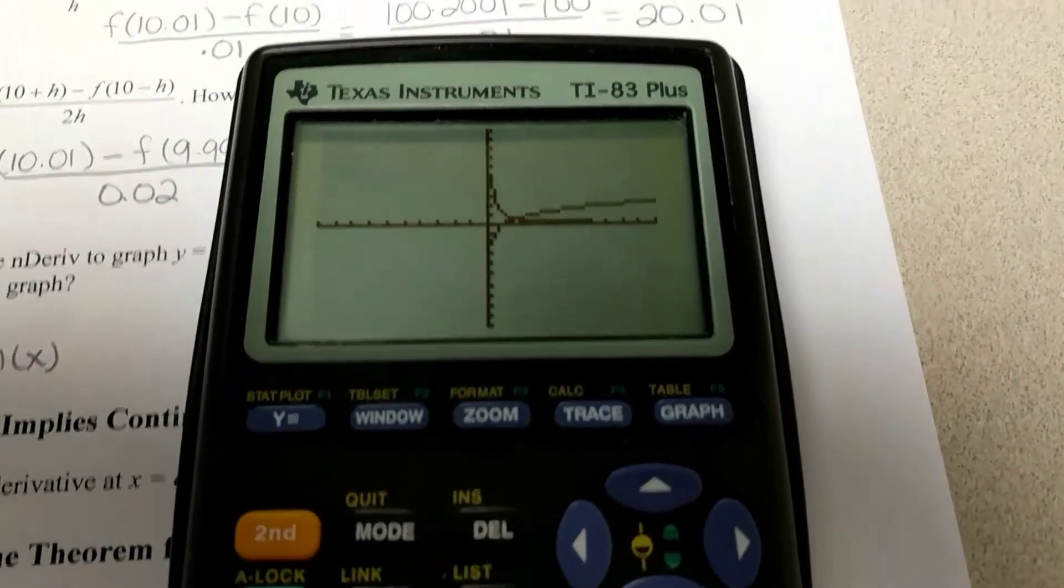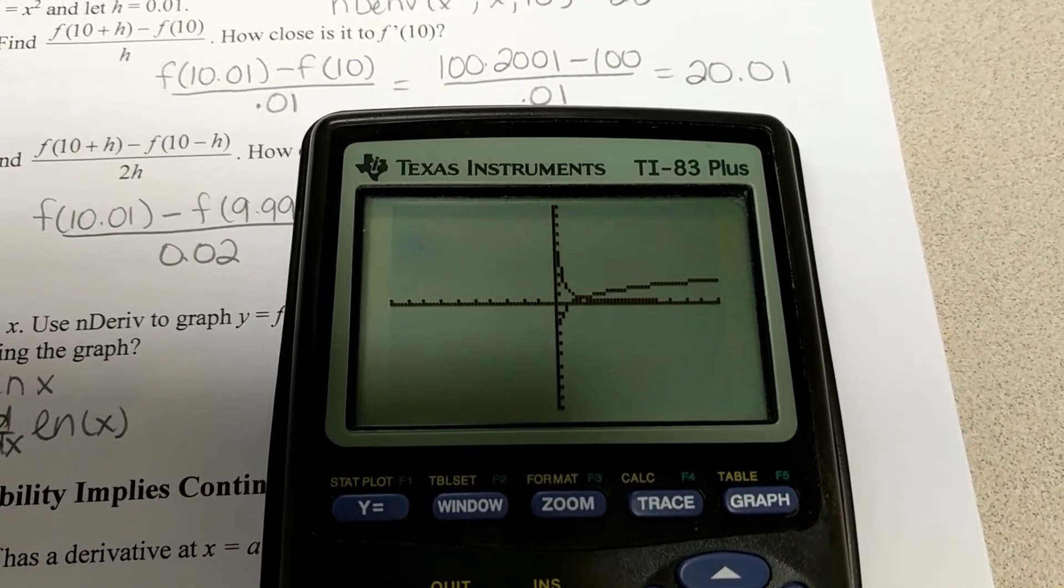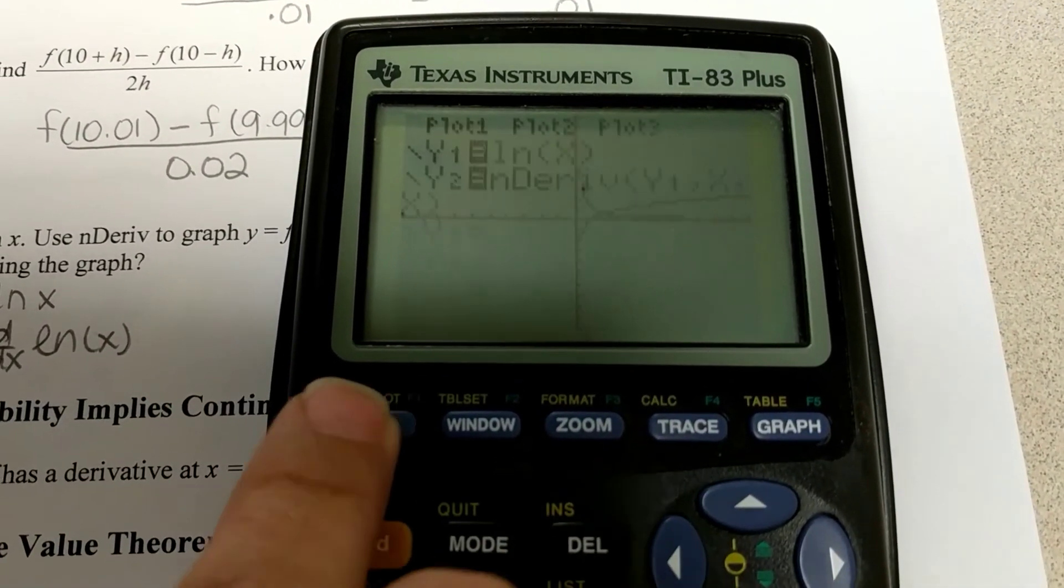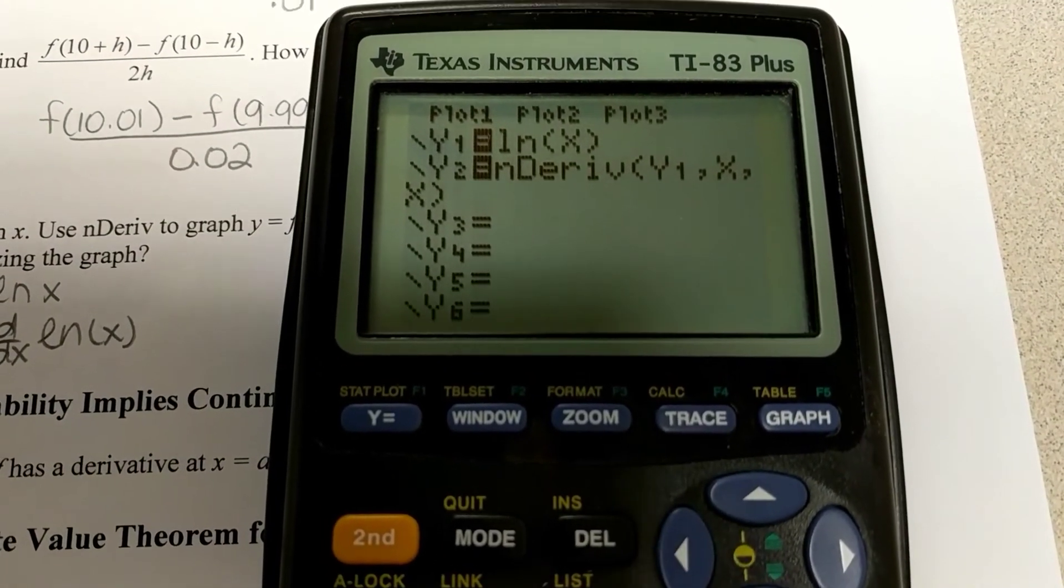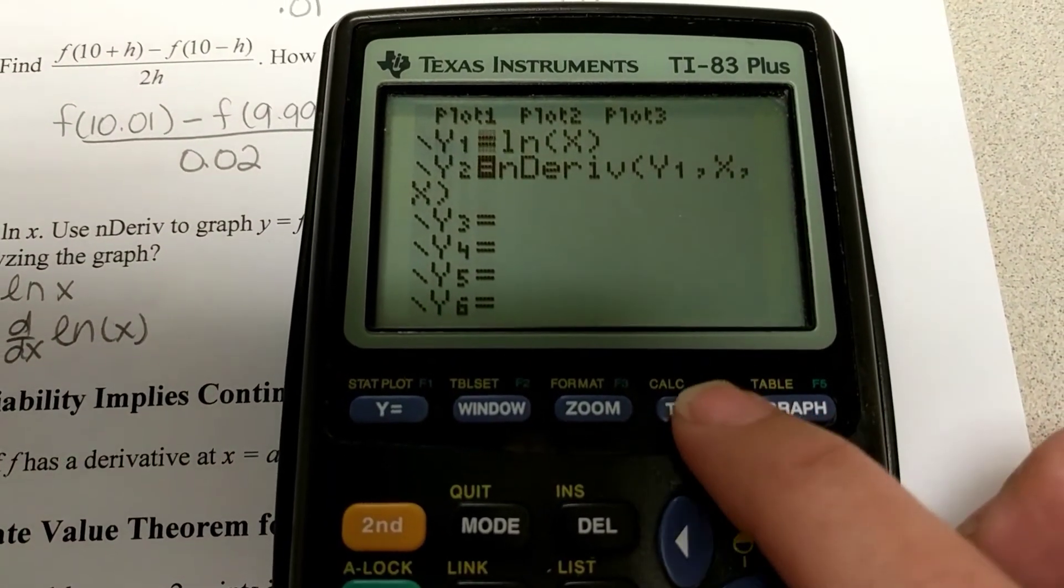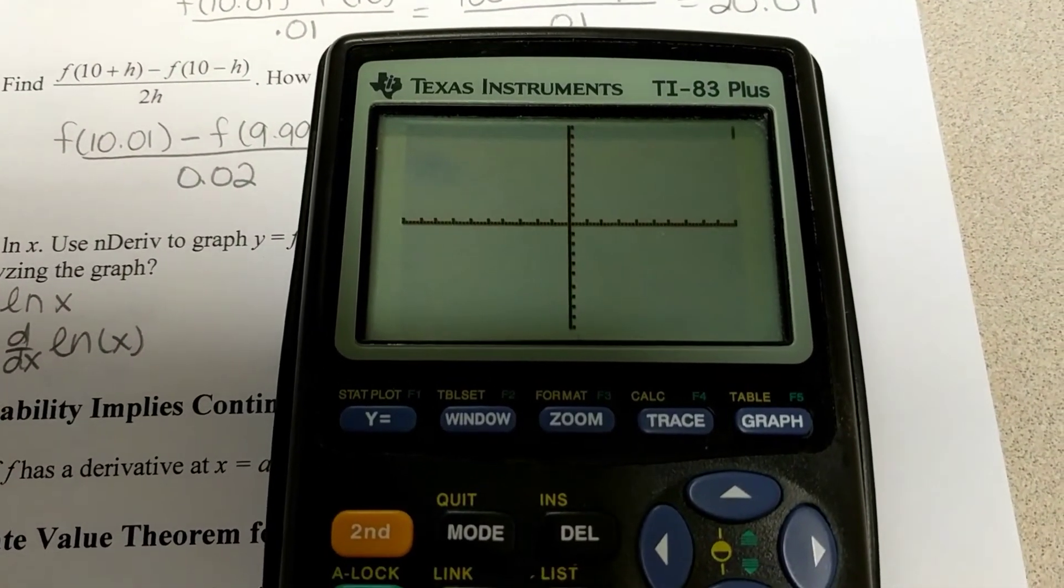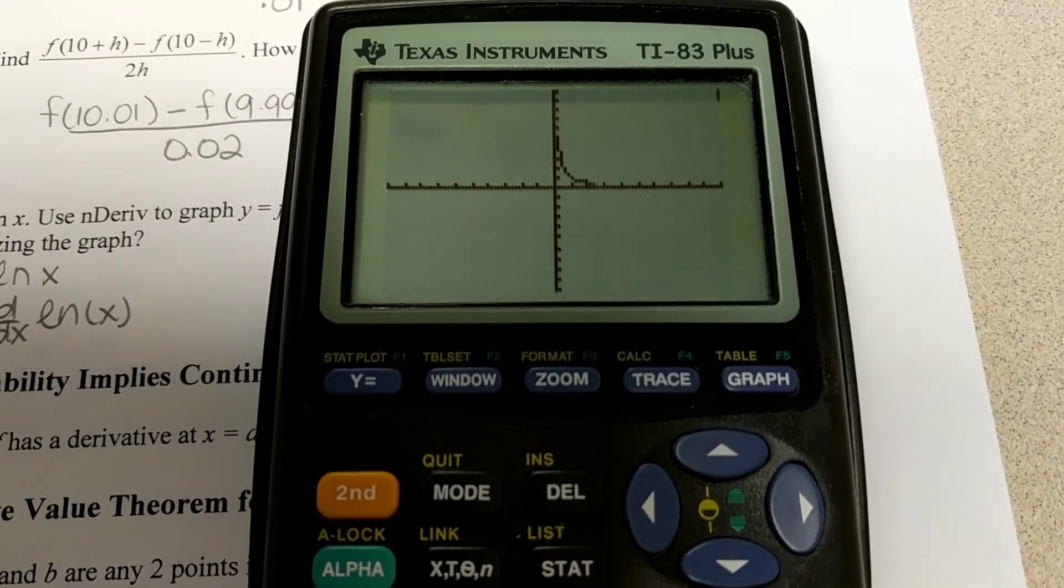All right. So, when I graphed it, this is the function that I got. And I had a hard time looking at it and figuring out which one was which. So, something that, in case you didn't know, if you go to your y equals, you can turn one of the graphs off. I'm going to turn natural log off. And so, now I can look at just the derivative. So, when I graph that, I get that function. It's a very strange function.